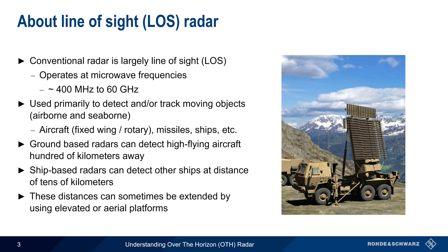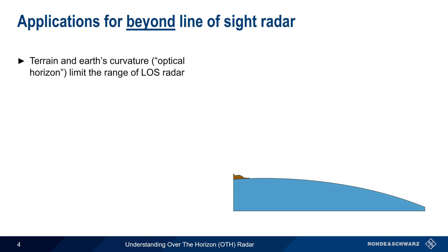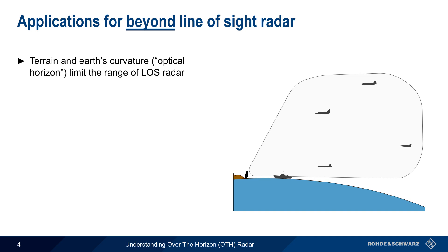These ranges can sometimes be extended by elevating the radar, either by placing it on a mast or tower, or by installing it on an aircraft. The range of a line-of-sight radar is limited by both terrain features, such as mountains, and by the curvature of the Earth. For example, this radar could detect both ships and planes which lie above the optical horizon, but it could not detect targets which lie below or beyond this horizon.